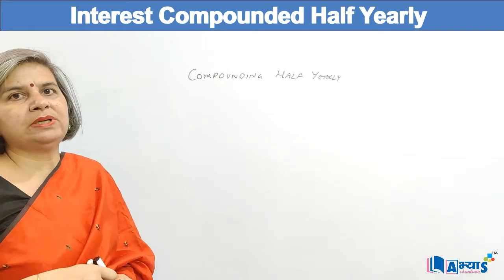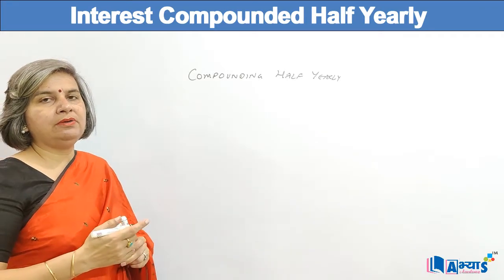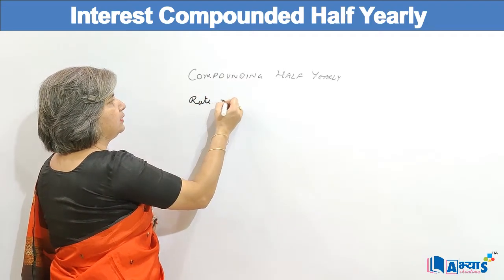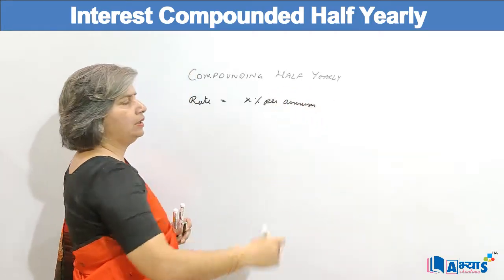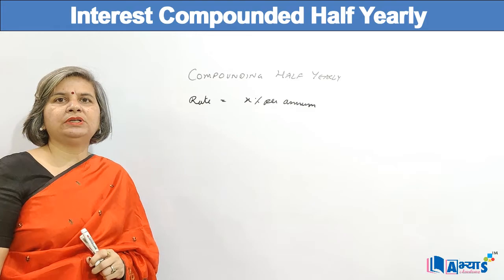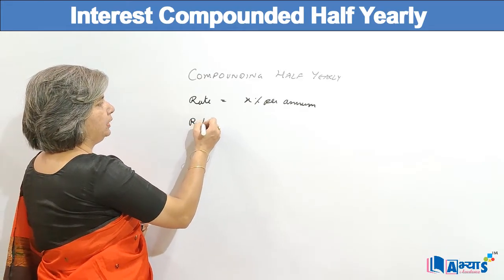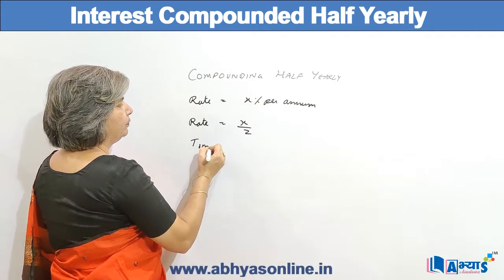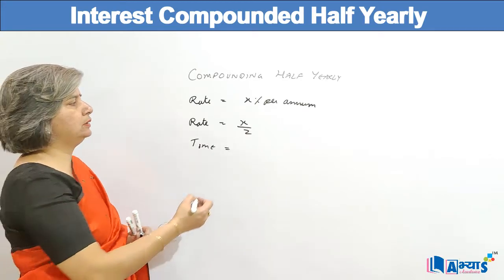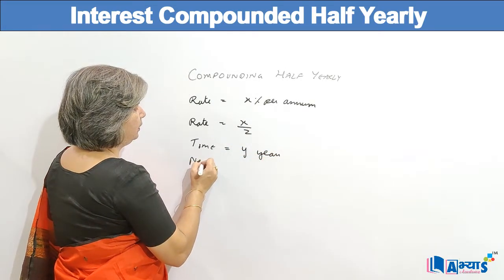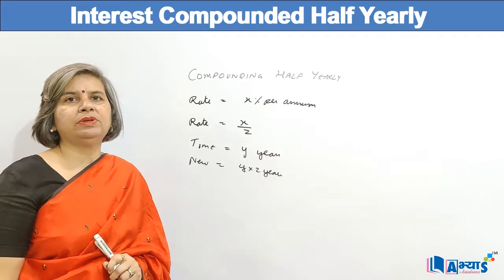Compounding half yearly means after every six months we are adding that interest into the principal and then calculating it. The rate is generally given per annum, say x percent per annum, meaning it is given for the whole year. But since we are compounding half yearly, we first check how many half years are in a year — there are two. So the new rate will be x divided by 2, and the time in years will be multiplied by 2. Then we solve it the normal way.